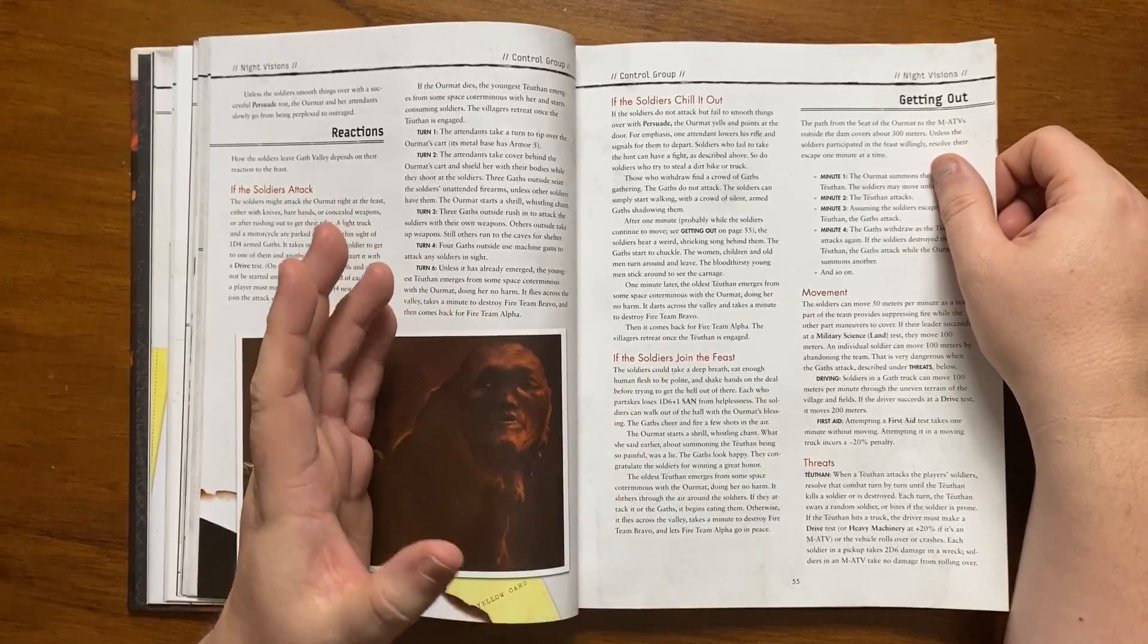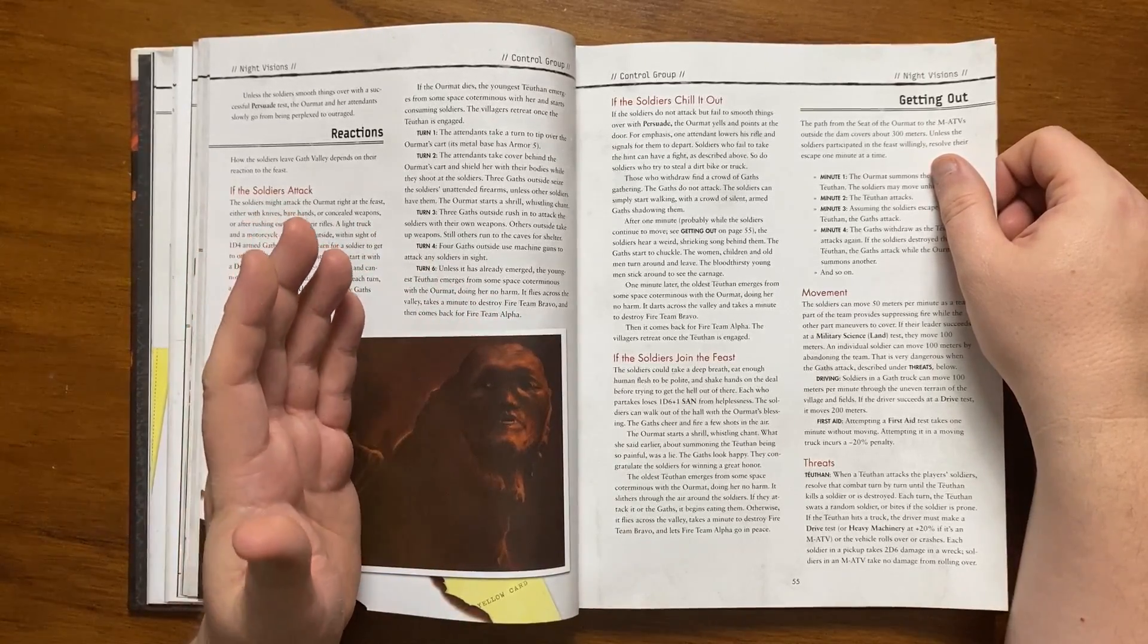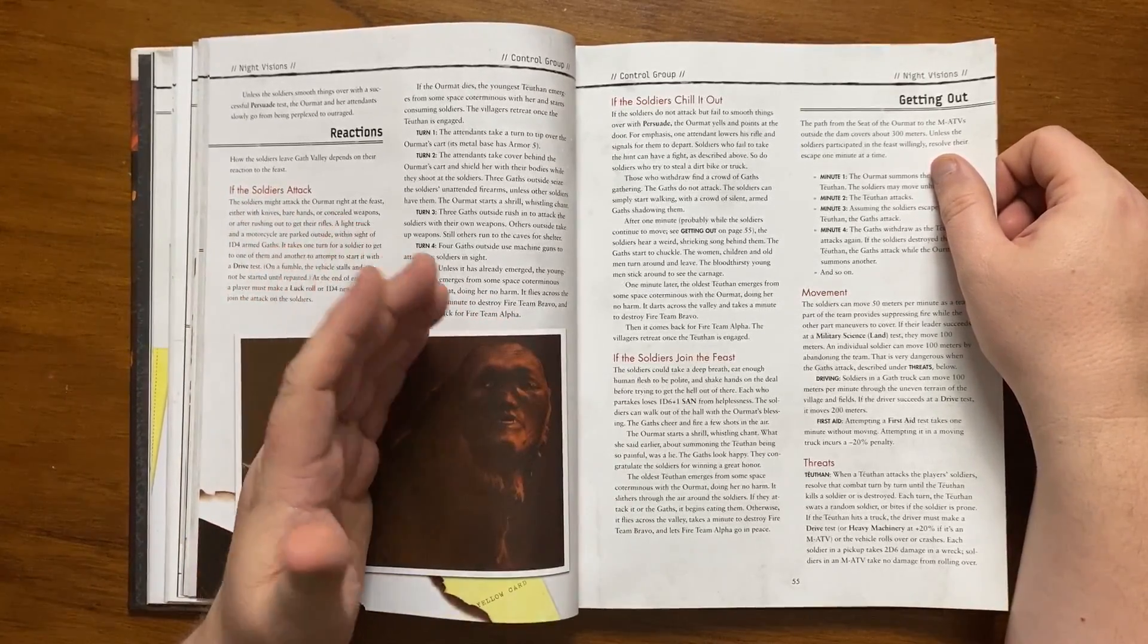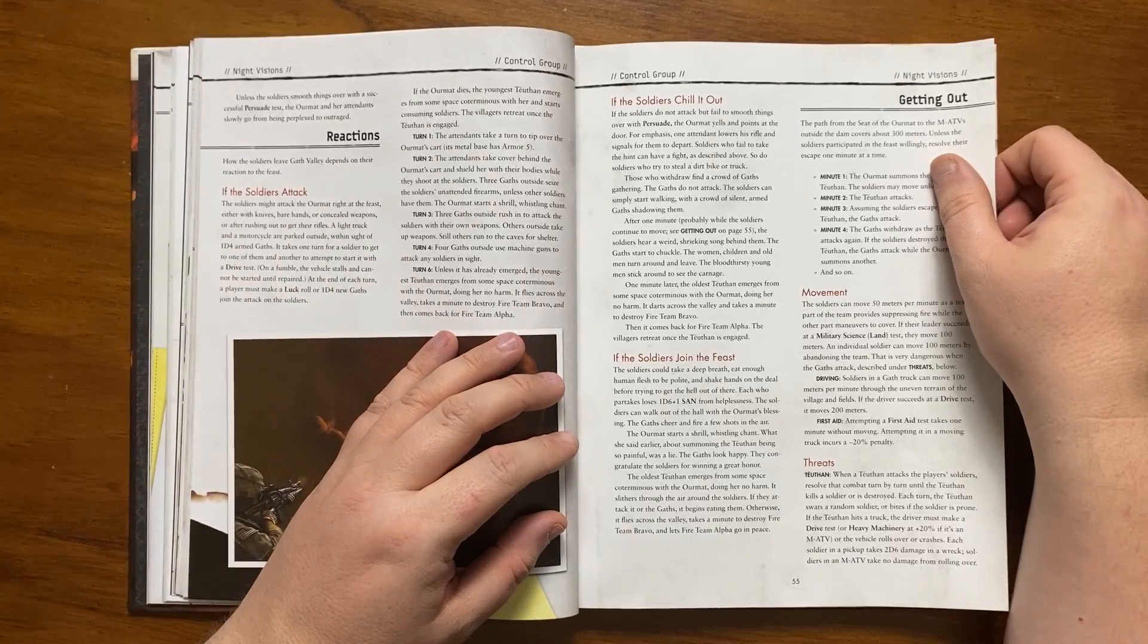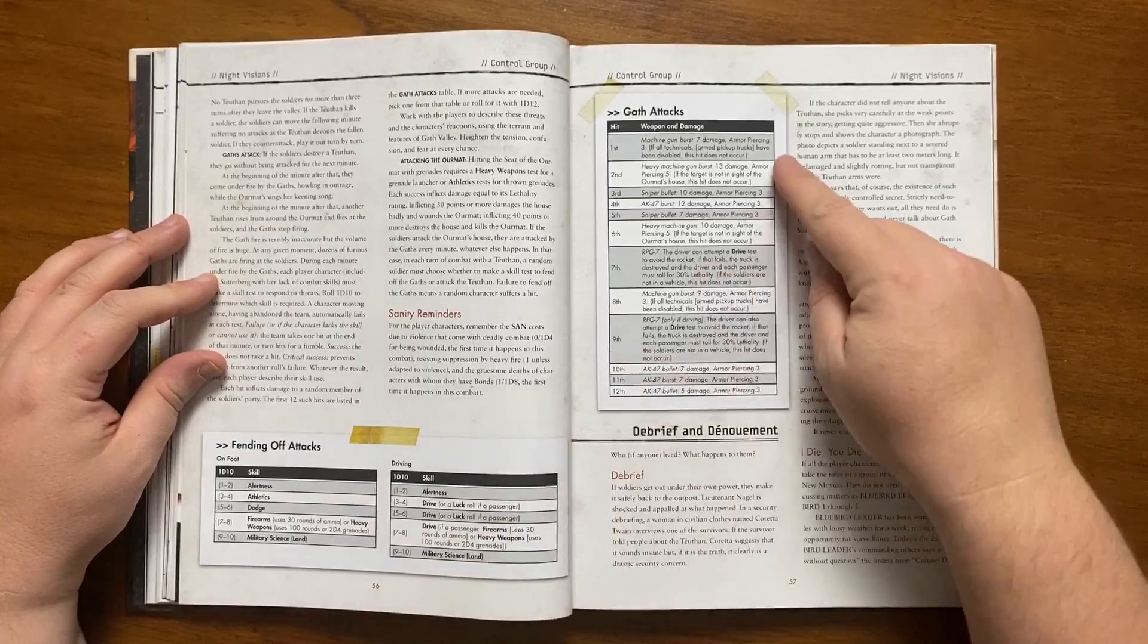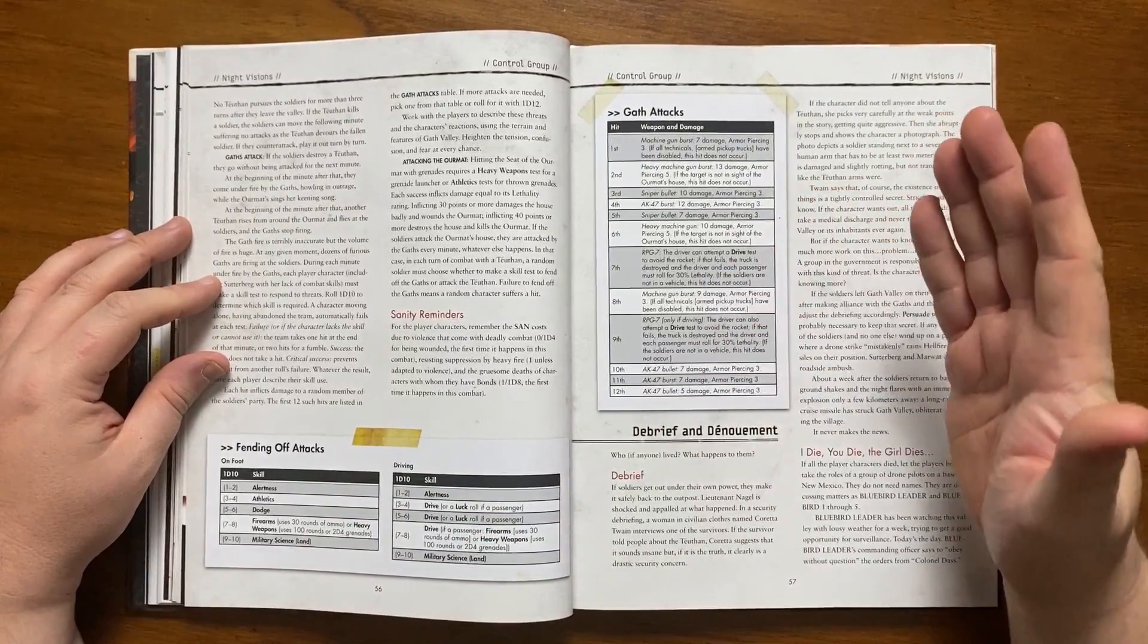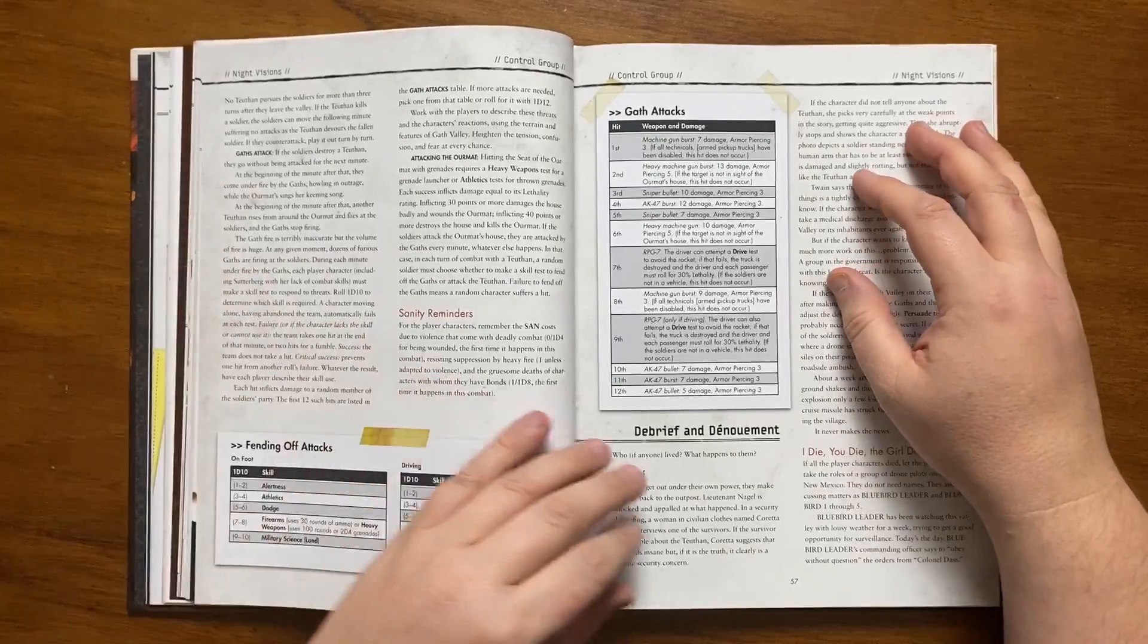It gives details on how the soldiers can get out of the valley which is around 300 meters long and it also talks about how the Tuathan attack the soldiers and even their vehicles though they will only pursue for three turns. The Gath attack in a much more random way and the methods of escaping them are different skill checks depending on whether they are on foot or driving. We're reminded that sand loss due to violence comes with consequences and the deaths of their brothers in arms will have an effect on their bonds.